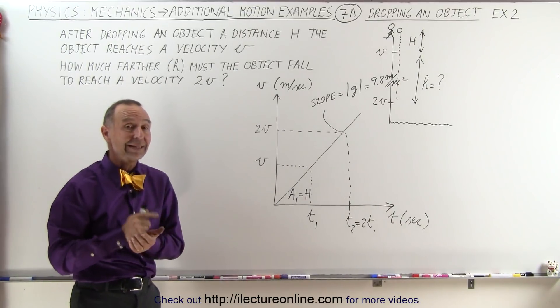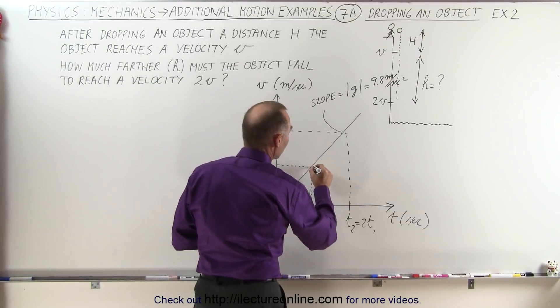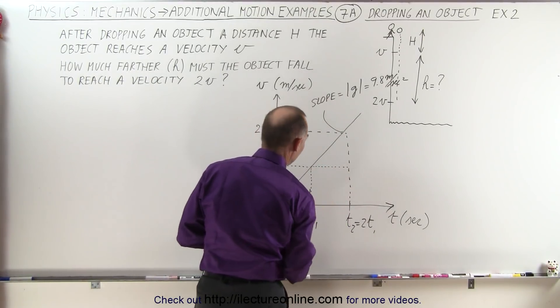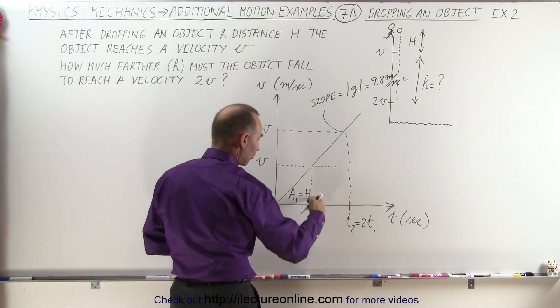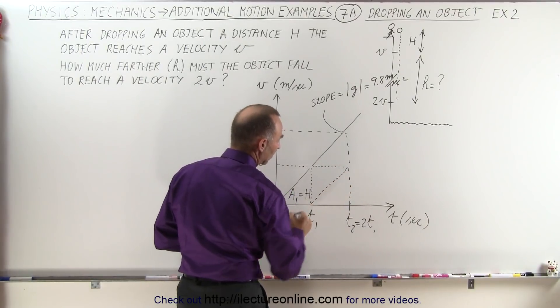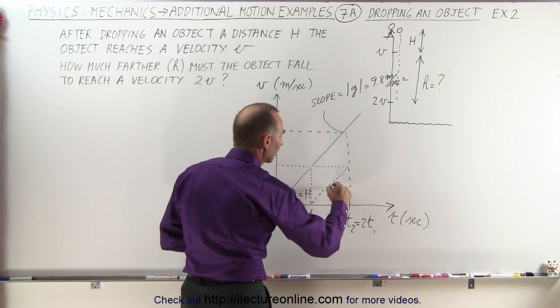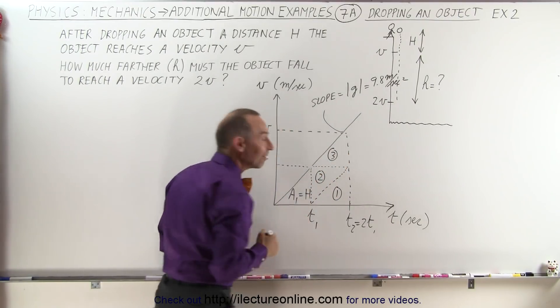When we do it graphically the answer is actually pretty simple because what we need to do here is draw a line straight across like this and then we can see that this triangle area here is exactly the same as this triangle area here. Then if I draw a small line across here, notice that if we take this area and this area and this area, those are all exactly the same shape.